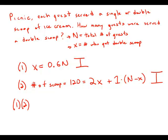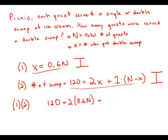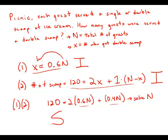But now we combine these statements. Because we know both equations, I'm going to take the equation from statement number two, and everywhere there's an x, substitute 0.6n. So that gives us the 60% who got a double scoop and the 40% who got a single scoop, and all these scoops together add up to 120. Now we can solve for n — we have one equation and one unknown. And once we find n, we can use the first equation to find x. So we have sufficient information to answer the question. The statements combined are sufficient, and the answer is C.